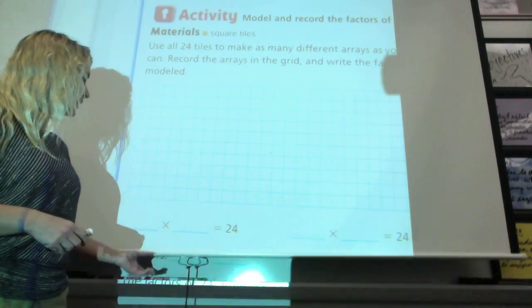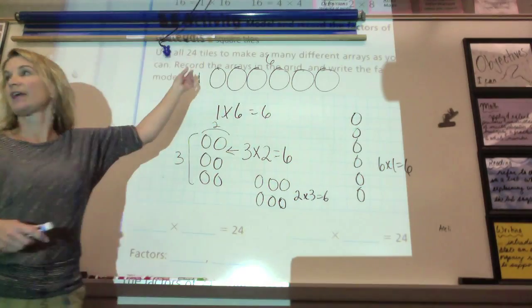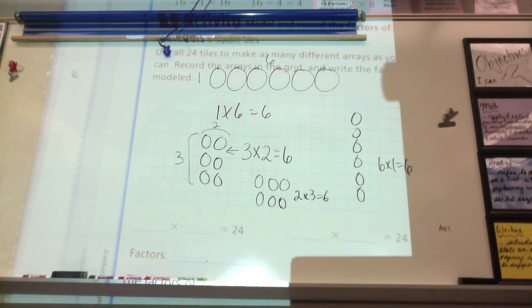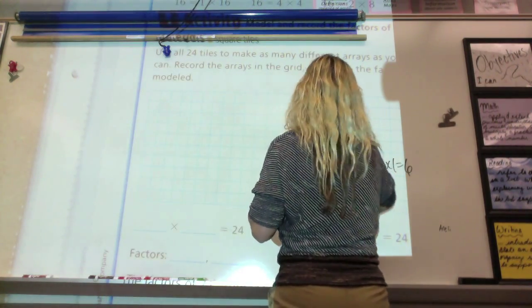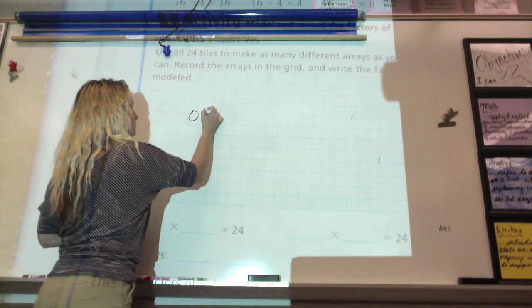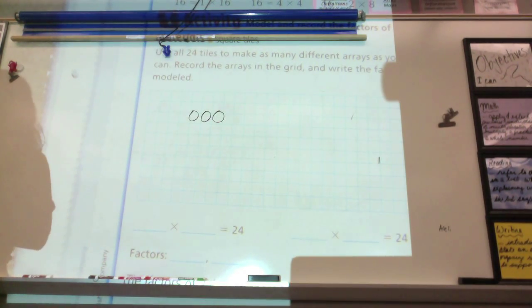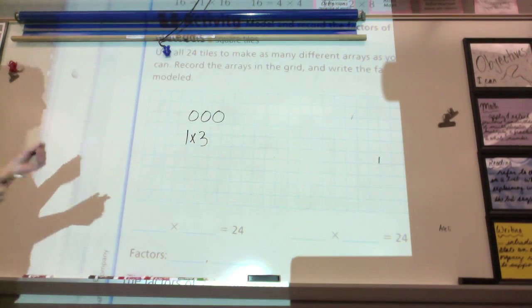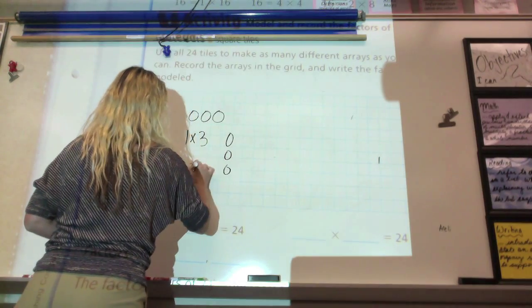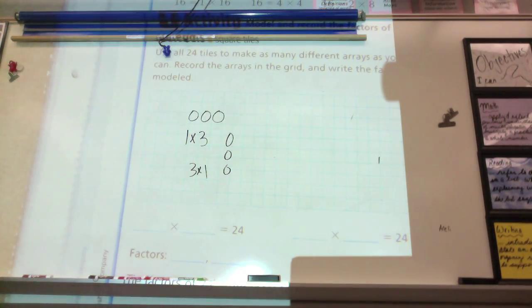So every number, I put this up already, but every number that is greater than 1 has an array. And every number can have an array by at least 1. Meaning, if I erase all this, can I make any other arrays besides 3 times 1?